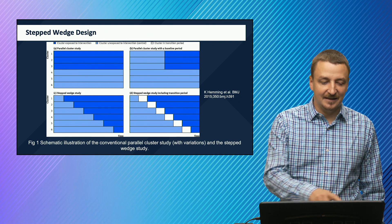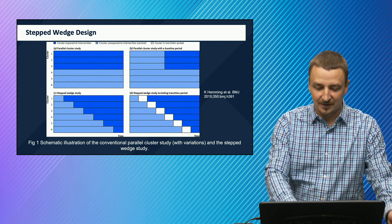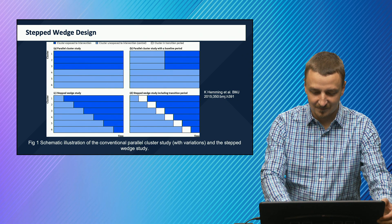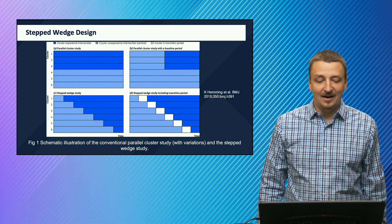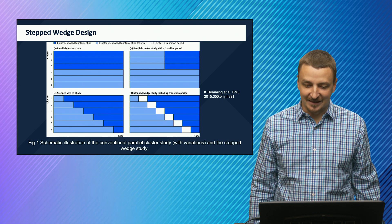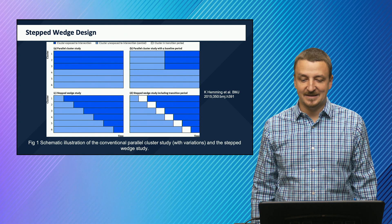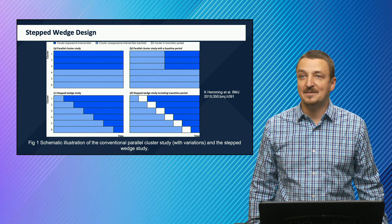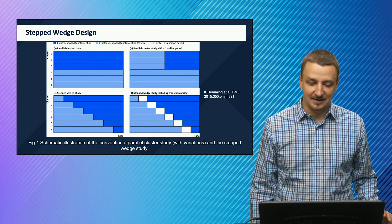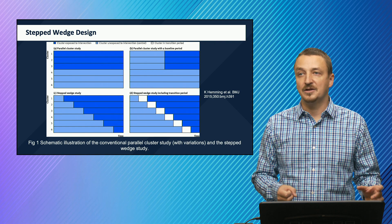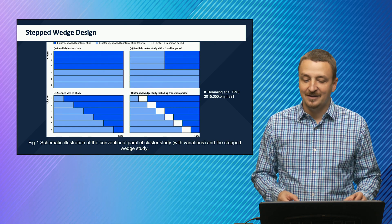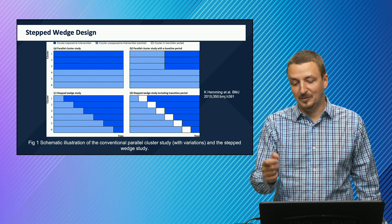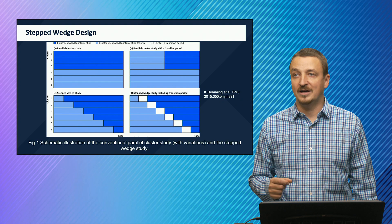Here you can see how a stepped wedge design looks compared to other designs. On the top left is the parallel cluster study; on the top right is a parallel cluster study with a baseline period. On the bottom left is a stepped wedge design without a washout or transition period—clusters transition directly from standard of care to intervention. On the bottom right is a stepped wedge design with a transition period of variable length, which helps ensure there are no carryover effects.